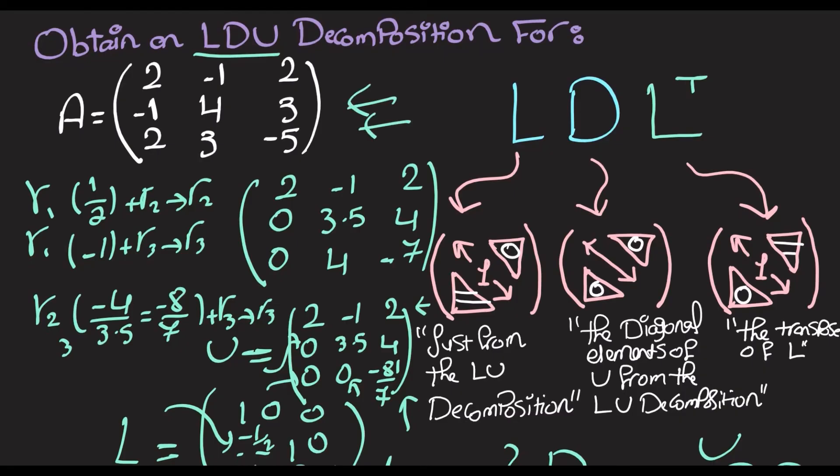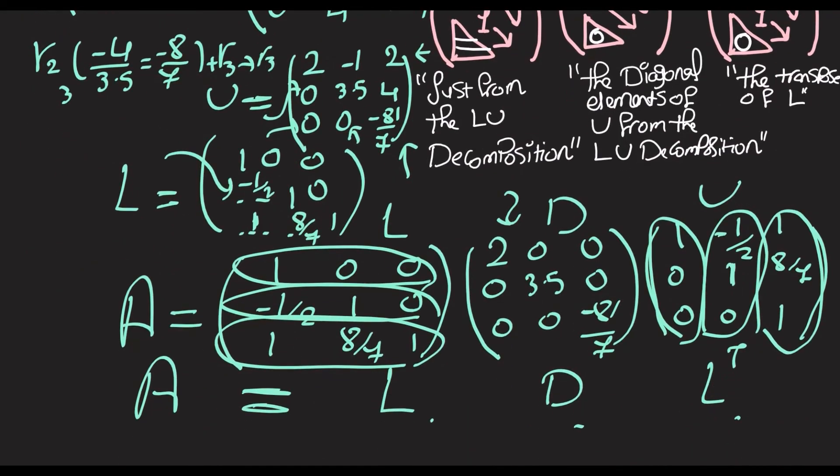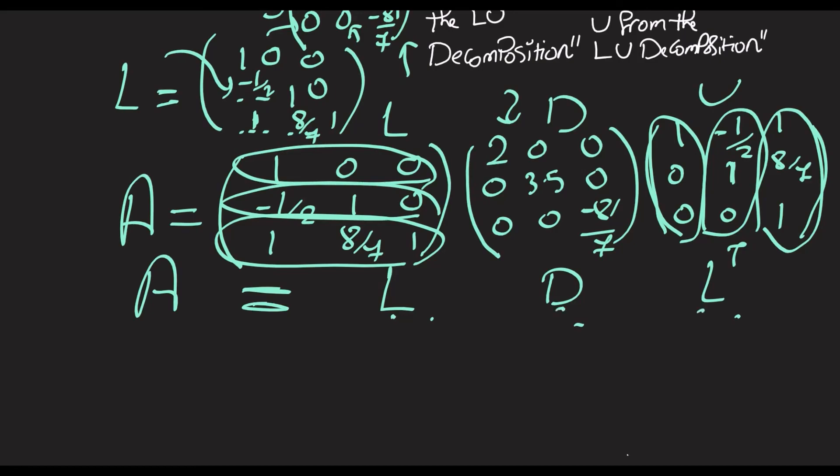If we do an LDU decomposition, it becomes an LDL transpose decomposition. So this is going to be so important when we try to find a Cholesky decomposition, which is also only applicable to symmetric matrices. We'll first need to find the LDL transpose decomposition.